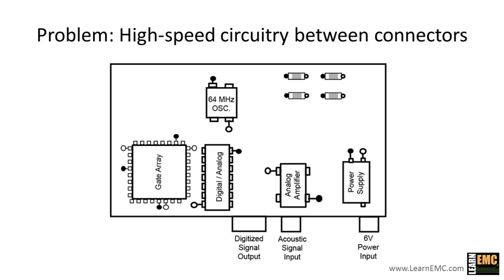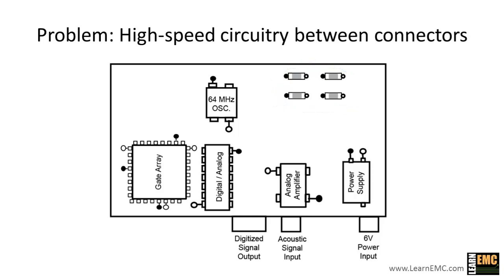Notice that some of the components have been rotated relative to their original position on the board. Also, there were four global decoupling capacitors on the original board and we've just moved them out of the way for now. This arrangement of components will allow us to shorten I/O lines and other high-speed digital lines, which reduces the likelihood of interference. But most importantly, with this new arrangement, we'll be able to lay out the traces so that there's no high-speed circuitry between external connectors. This means we've addressed the first major problem associated with this board.